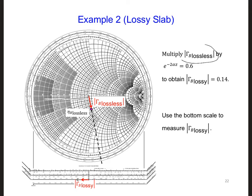Next, we want to take that value that we just got on the previous slide, and we want to multiply it times e to the minus 2 alpha z. So if we plug in our value for alpha, we'll get a 0.6. And so if we multiply 0.6 times 0.238, we're going to get the magnitude of the reflection coefficient for a lossy material is 0.14.